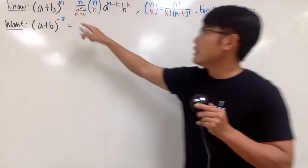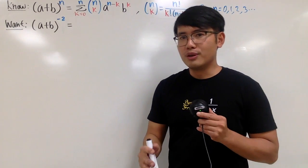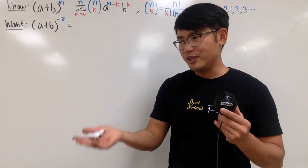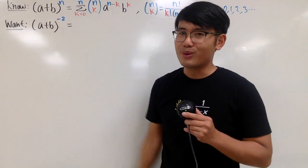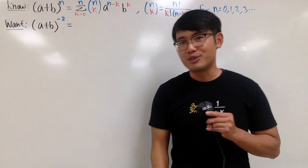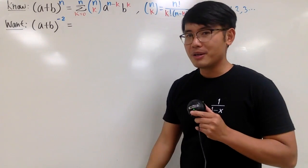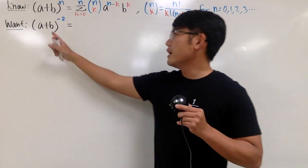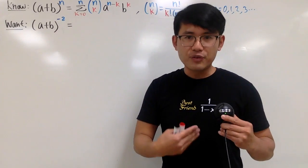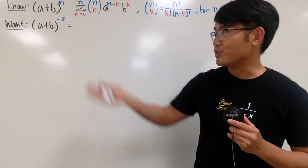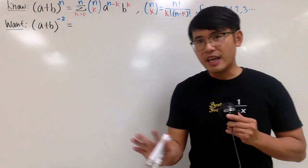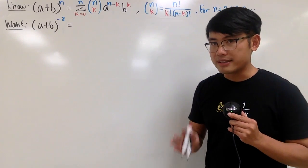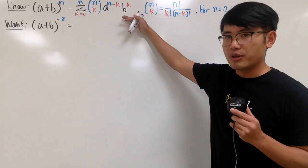Today we'll see: what if the power is a negative number or a fraction — anything in general, or maybe pi's power? In this case, what can we do? Some people may say this is just like our best friend, and we can just use that. But today we are not doing calculus — we are doing algebra. I'll show you guys the generalized version of the binomial theorem.